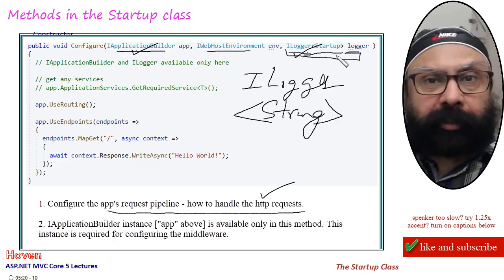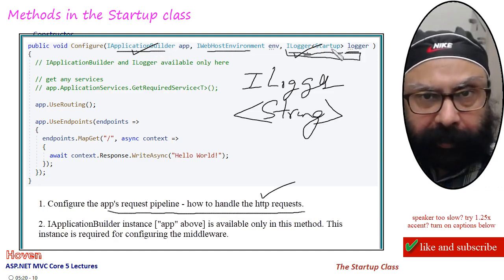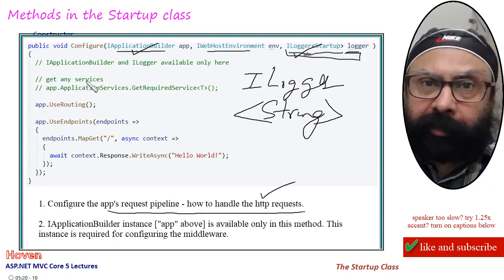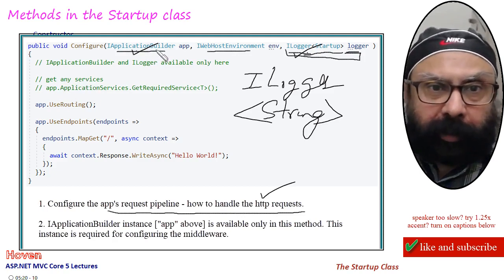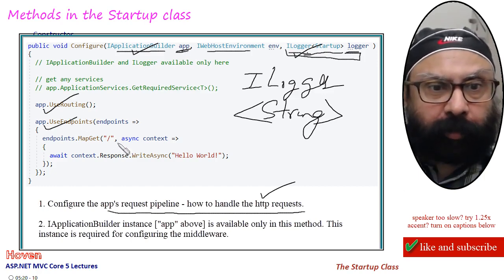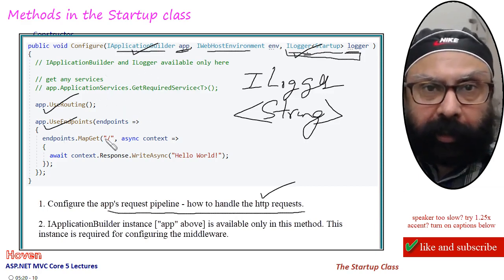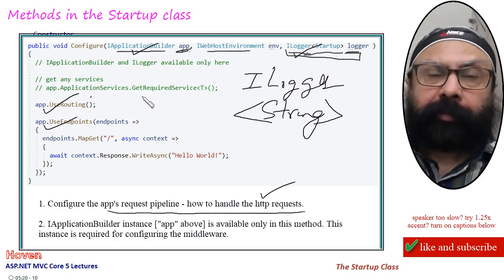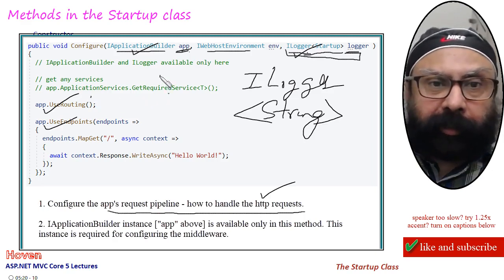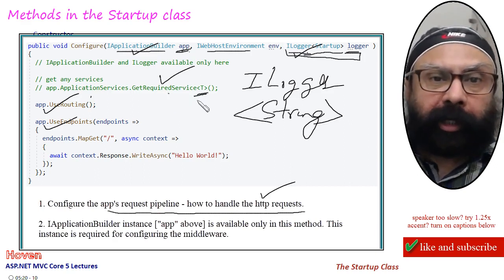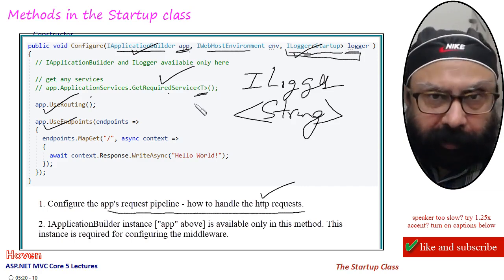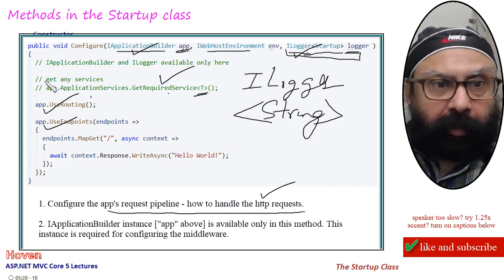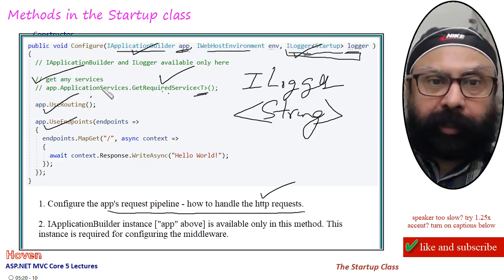If you do not want to get a service through arguments, you can get any service by using the app instance. This app instance is very important — it is used almost everywhere in this method. The application builder itself can be used to get any other service using the GetRequiredService method, where T is any type of service you want, provided it exists. So you can get any services available here.